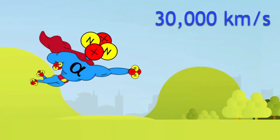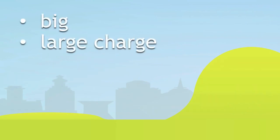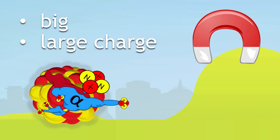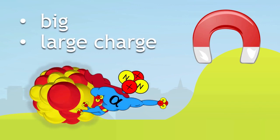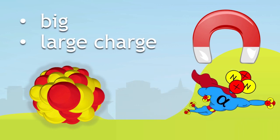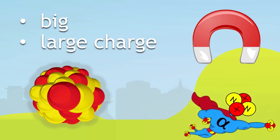You can use these properties to detect alpha radiation. Because it is big and has a large charge, you can make it move through an electric field. Here's your alpha particle coming out of the nucleus, and it's going through an electric field. As it goes through, it bends.